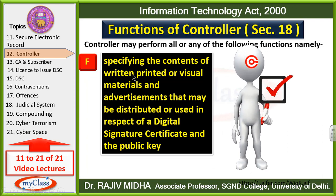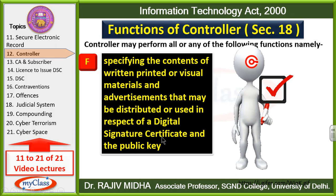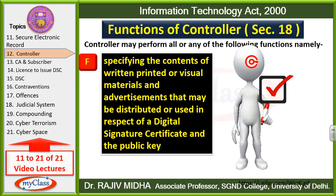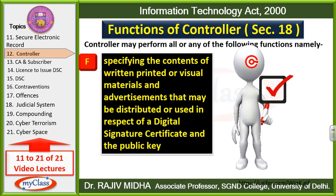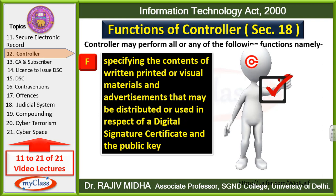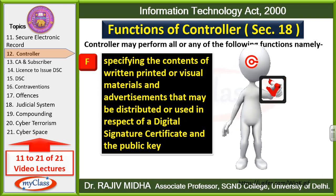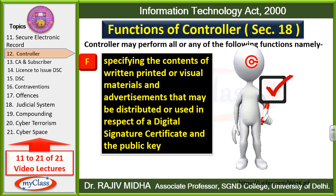F point: Specifying the contents of written, printed or visual material and advertisements that may be distributed or used in respect of digital signature certificates. Certifying authorities ne subscriber ko digital signature certificates dene hain; iske liye certifying authorities jo advertisement karengi, us advertisement ke andar kya printed matter ho sakta hai, kya visual matter ho sakta hai, uske contents kya honge — is baat ko controller hi specify karega.